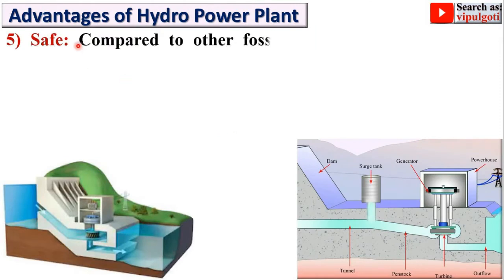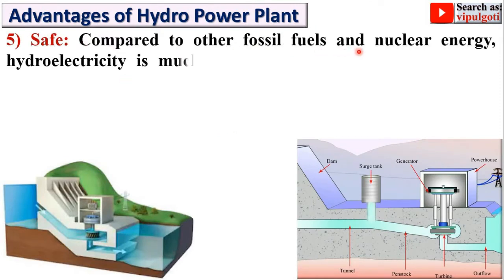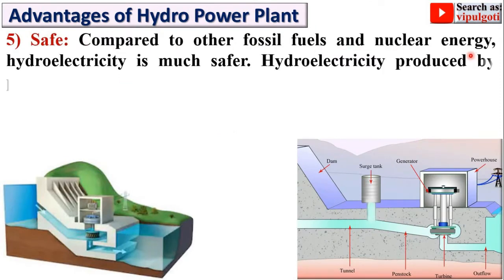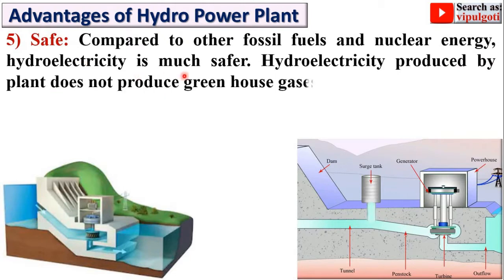Next: Safe. Compared to other fossil fuels and nuclear energy, hydro electricity is much safer. Hydro electricity does not produce any greenhouse gases, which are responsible for the greenhouse effect and ozone depletion. So hydro power plants are much safer compared to nuclear and thermal power plants.